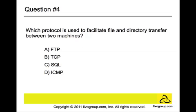Question number four: Which protocol is used to facilitate file and directory transfer between two machines? The answer is A, FTP — File Transfer Protocol. It is a standard network protocol used to copy a file from one host to another over a TCP-based network, such as the internet. FTP is built on a client-server architecture and utilizes separate control and data connections between the client and server. It works at the application layer, layer 7 of the OSI model.